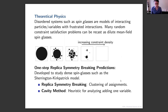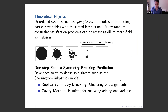All of the models I've told you about lie in what the physicists call the one-step replica symmetry breaking universality class, meaning they all behave in roughly the same way. Over the course of the talk, I want to explain what some of these terms mean — like replica symmetry breaking, which says something about the way solutions break into clusters, and the cavity method, a heuristic for calculating various quantities in these models.